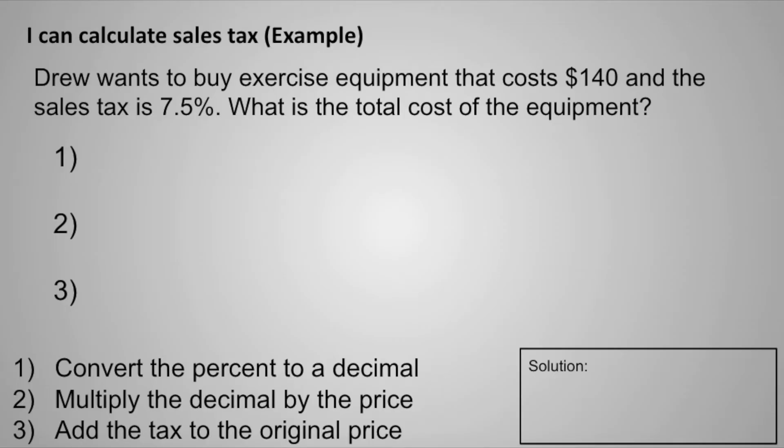So there are three steps in order to find sales tax. The first step is to convert the percent to a decimal. In order to do this, we need to remove the percent sign and then divide by 100. 7.5% as a decimal is 0.075. Moving on to step number two, we multiply the decimal by the price. 0.075 times 140 equals 10.50.